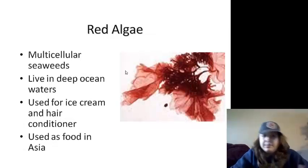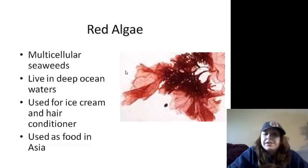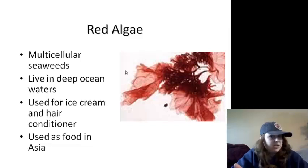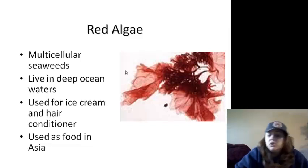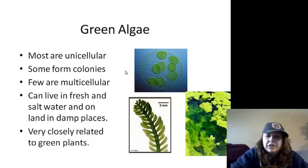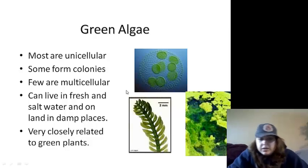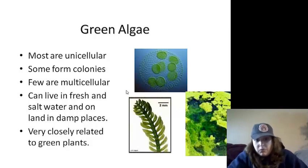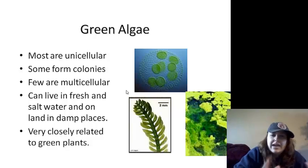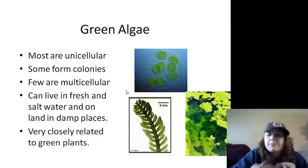Red algae — it's red. Multicellular seaweeds that live in deep ocean water, used for ice cream, hair conditioner, and Asian food. Green algae — it's green. Most are unicellular; some form colonies like the Volvox, and some are multicellular. They can live in fresh and salt water and damp places on land — they just need damp places, not strictly water. They are very closely related to green plants.